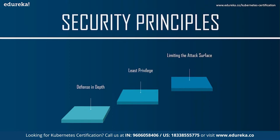The second Kubernetes security principle is the principle of least privilege — restricting access so that different components can access only the information and resources they really need. In the event of a component being compromised, an attacker can reach only the subset of information available to that component, limiting the blast radius of the attack. For example, in an e-commerce store built with microservices, different services might each be granted access to only the appropriate parts of the database.